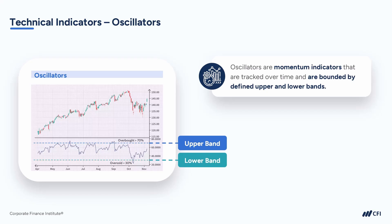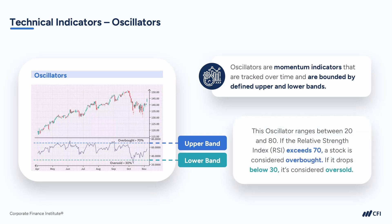A commonly used oscillator is the RSI, or Relative Strength Index. The specifics of how this is calculated are outside the scope of this course, but at a high level, this oscillator ranges between 20 and 80. If the RSI starts to exceed 70, the stock is considered overbought. If it drops below 30, it's considered oversold. These types of indicators can be used as further evidence to confirm that a suspected trend is taking shape.